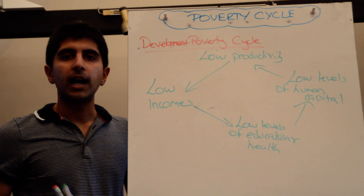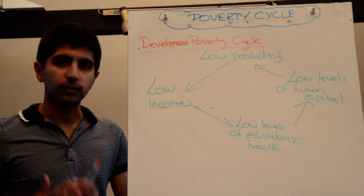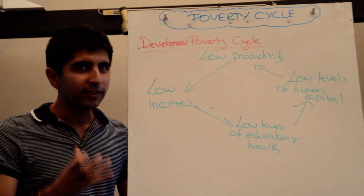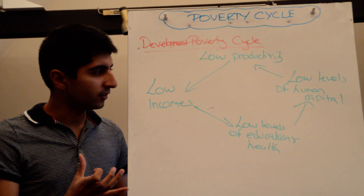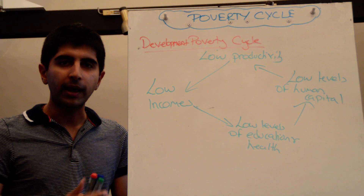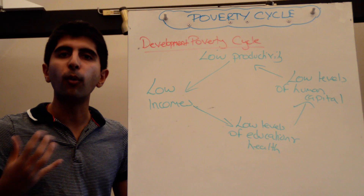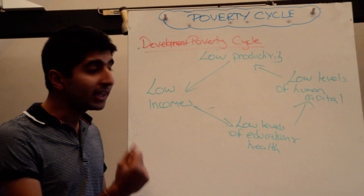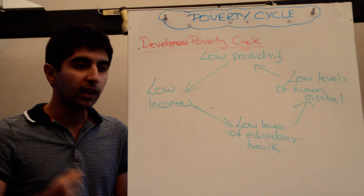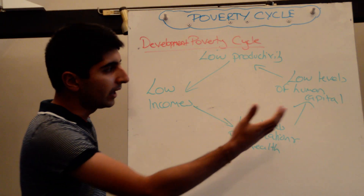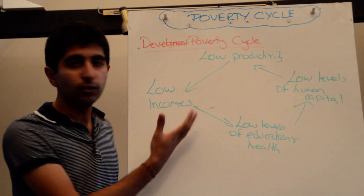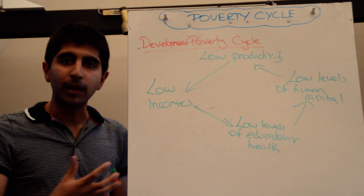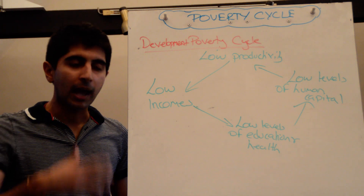So this is the development poverty cycle, which again feel free to use in an essay. What we're trying to say is poverty is disastrous — low incomes are horrible, and what it can do is just promote more and more poverty and more and more low incomes. So breaking these poverty cycles is fundamental. Government policies aimed at dealing with the issues of low incomes and some of the other issues in these cycles is fundamental in getting people out of poverty and promoting development.